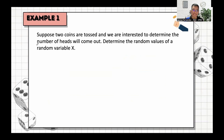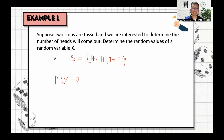Given our sample space S = {HH, HT, TH, TT}, we find the probability values. For the probability of X equals 0 — meaning no heads — only one sample point qualifies: tail and tail. So P(X=0) = 1/4.